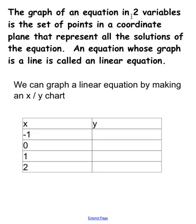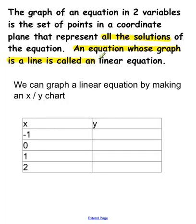The graph of an equation with two variables is a set of points in a coordinate plane that represent all of the solutions to that equation. We're going to do three points and then connect those dots, using arrows so it represents that it continues onward. An equation whose graph is a line is called a linear function — that comes from the fact that the word 'line' is in the word 'linear.' We're going to make what's called an x and y chart.